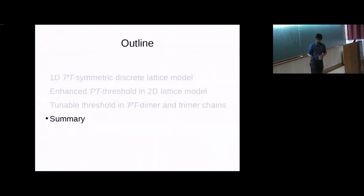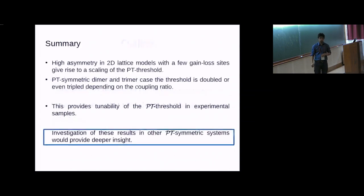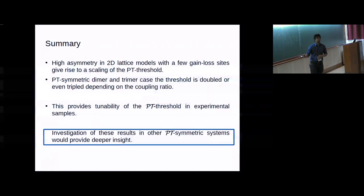I'll just summarize. It was fairly brief. What we saw was that adding neutral chains to a PT symmetric lattice enhances your PT threshold. This high asymmetry has a strong renormalization—it strongly renormalizes your threshold. In the 2D simple cases, the experimentally realizable cases, you're able to see three times the threshold for a particular value of the coupling ratio. This provides a way of tuning your PT threshold as per your liking. Although these systems—we have assumed tight-binding models—investigation into other models can give a deeper understanding into such systems. With that, I'll thank you and take questions.